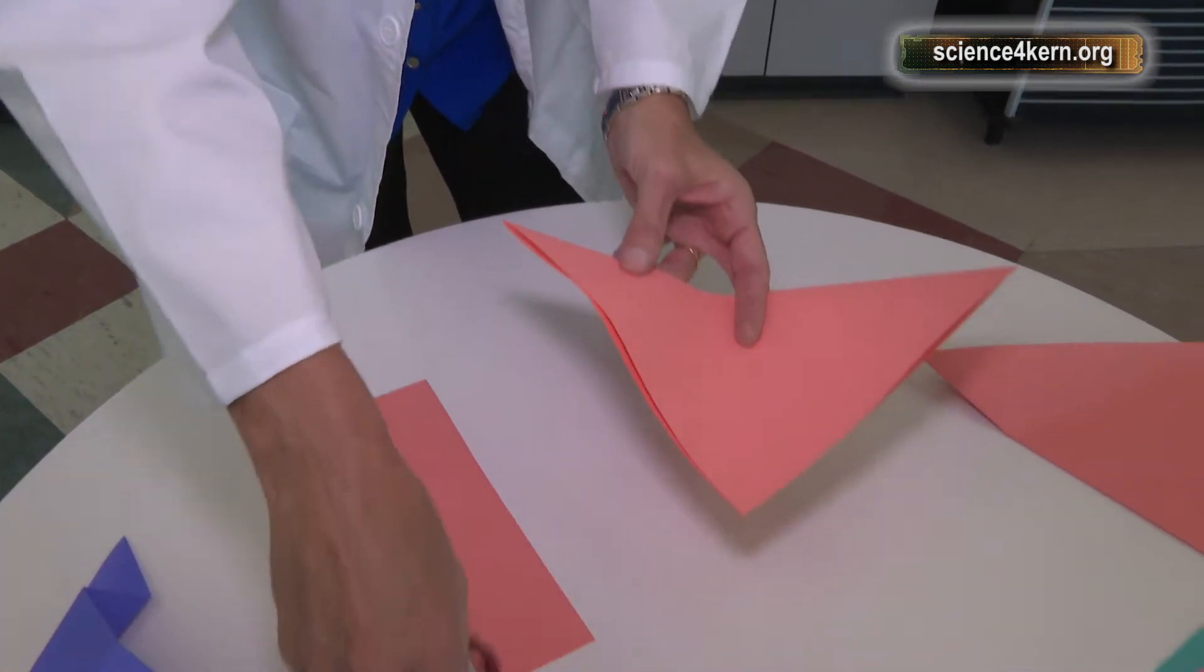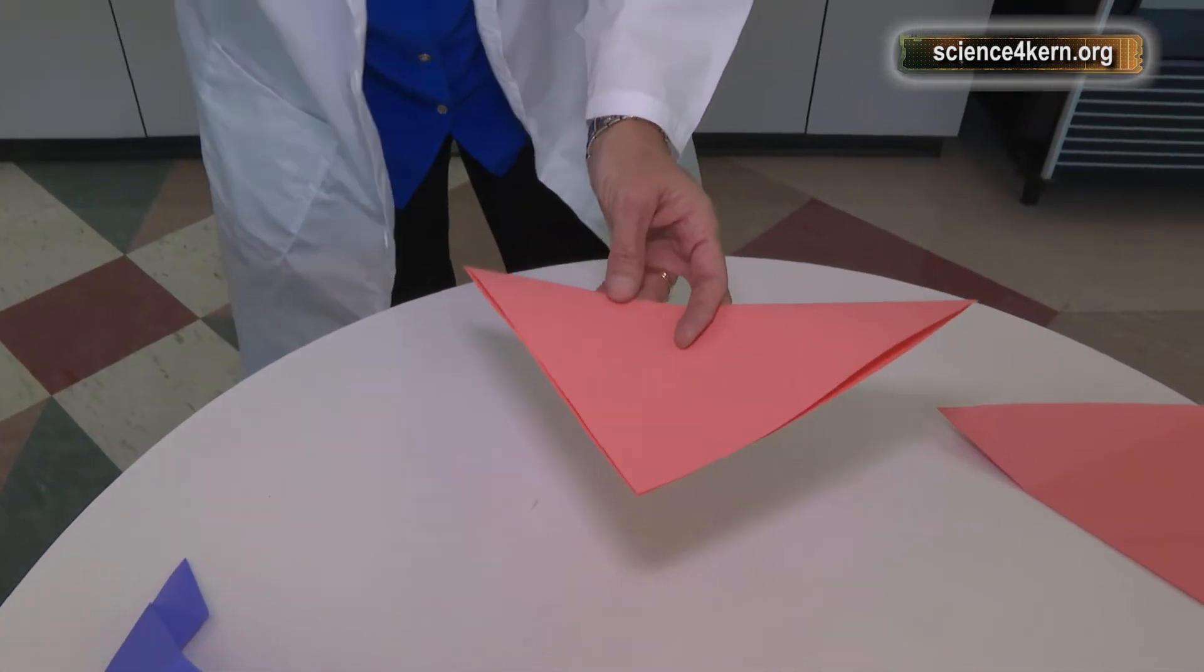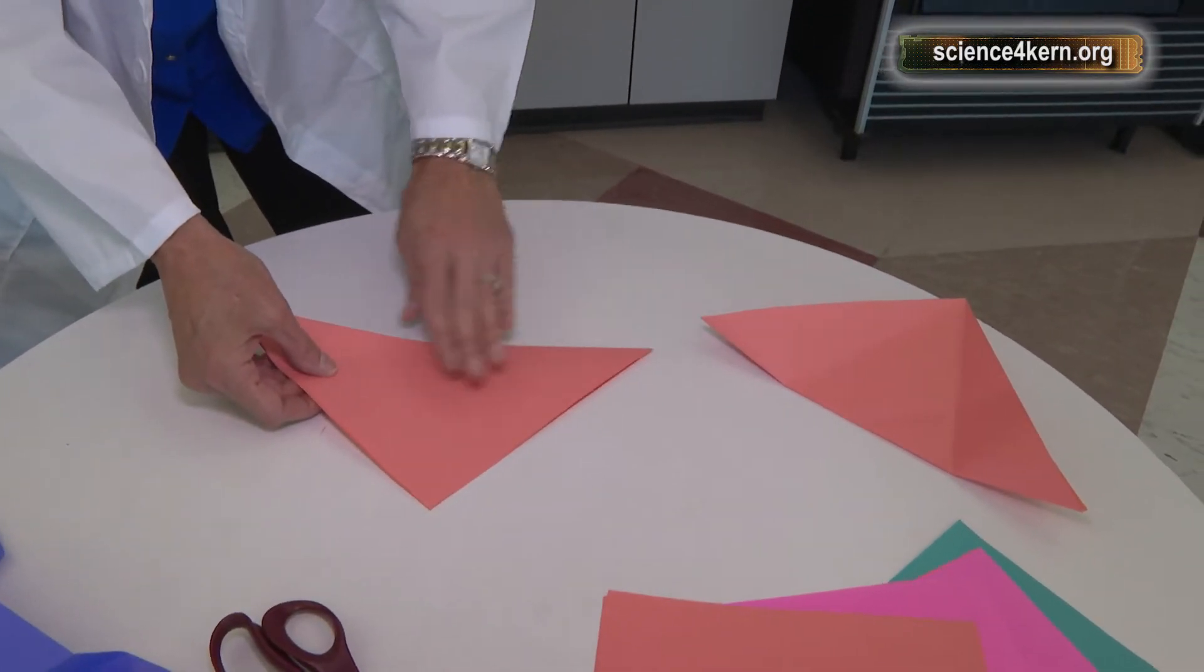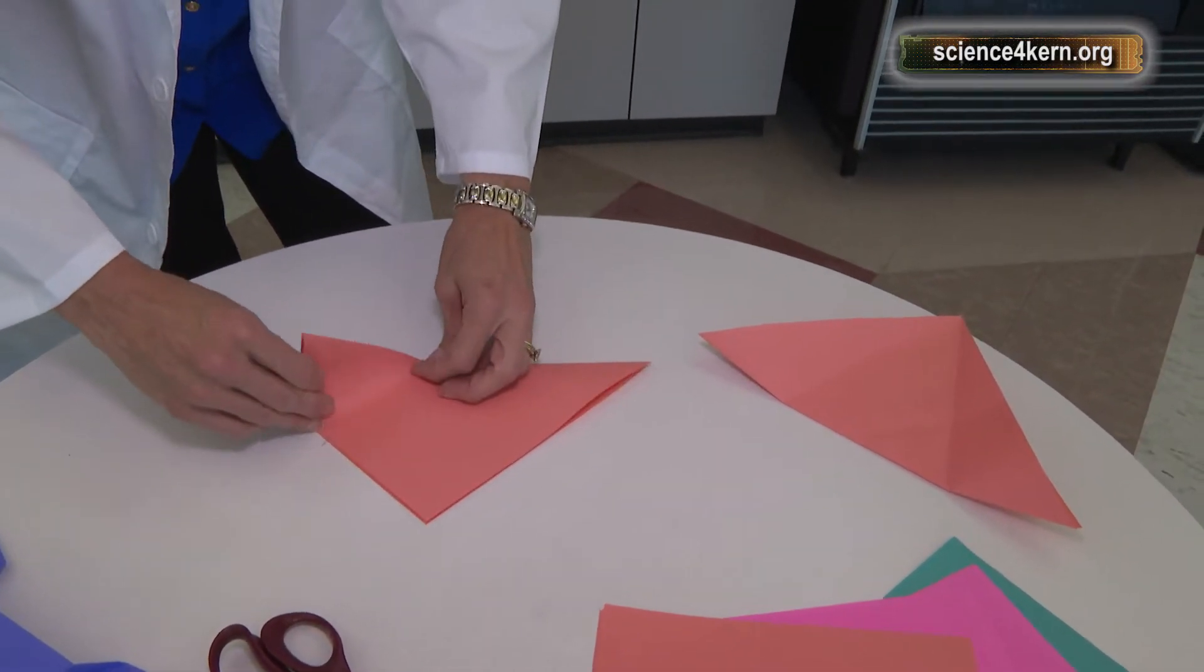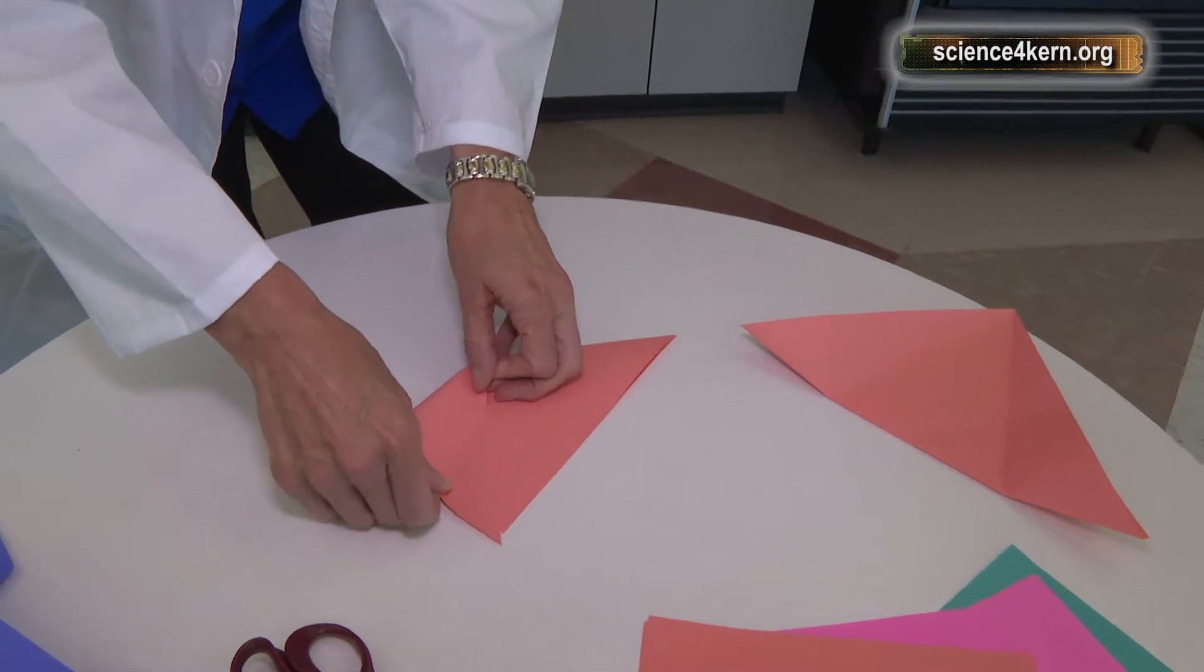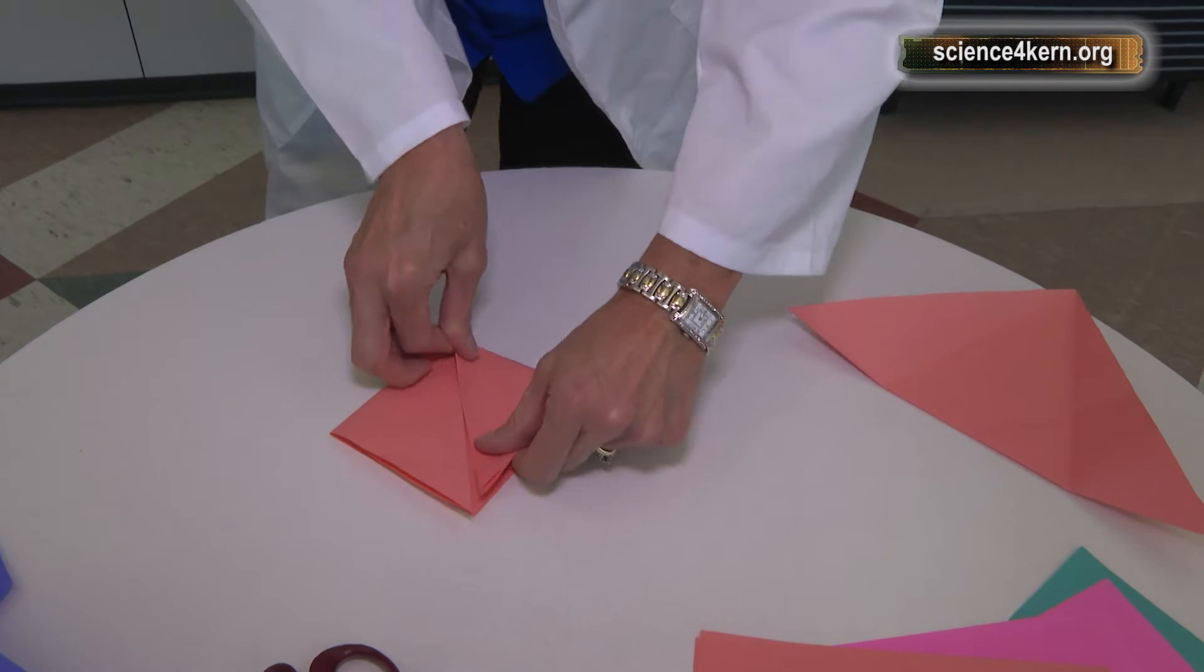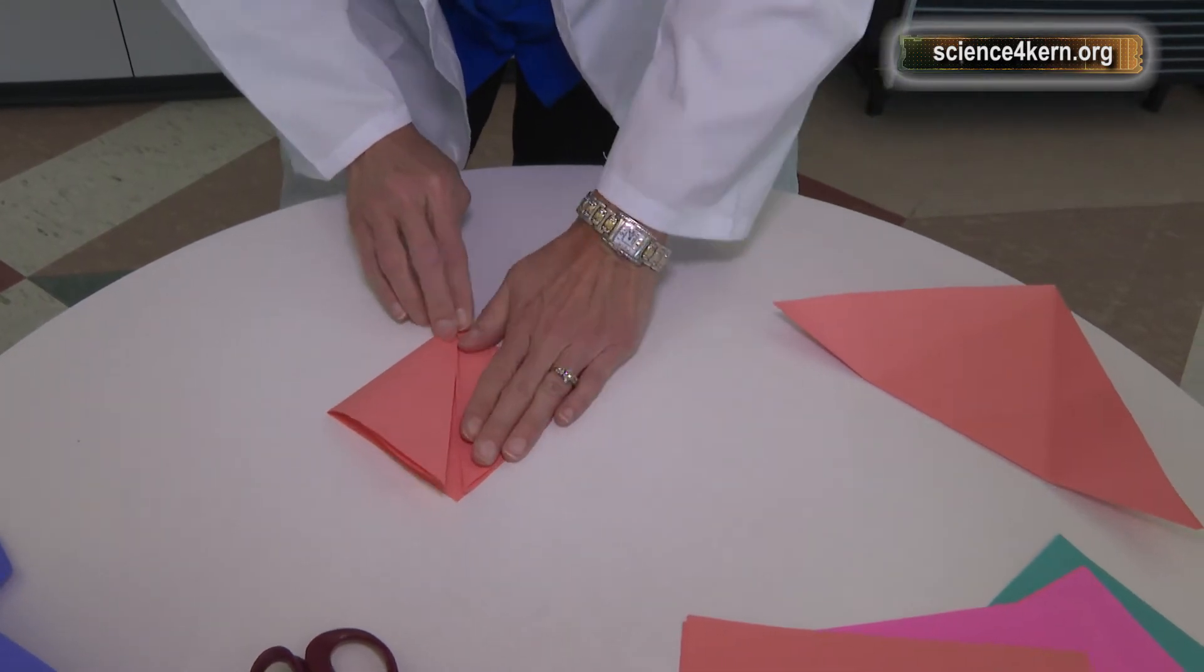And the rectangle that we cut off, we can just get rid of that. But we have this nice triangle shape. And we fold that way. And then we fold back that way.